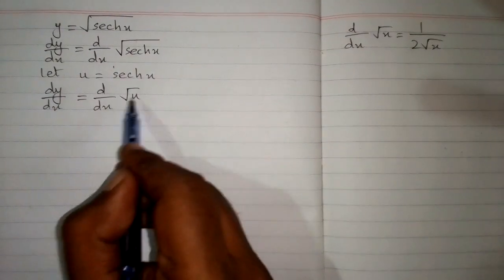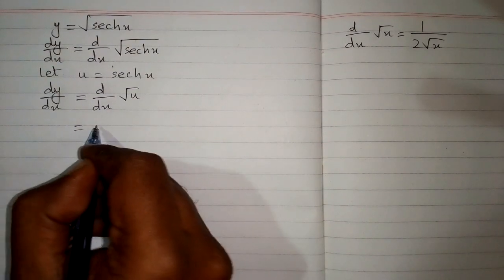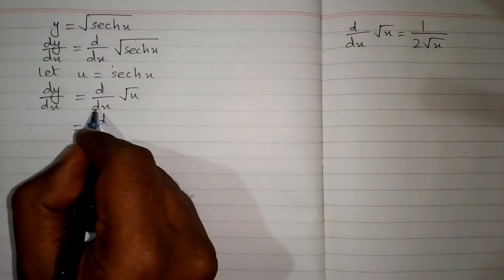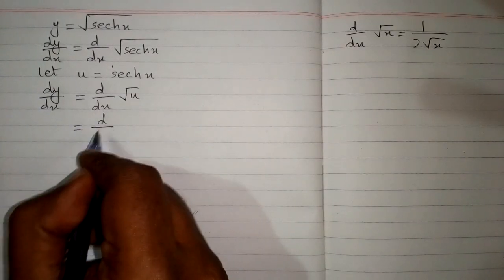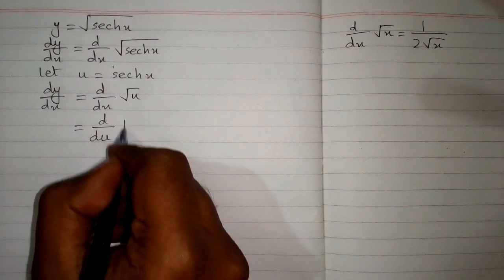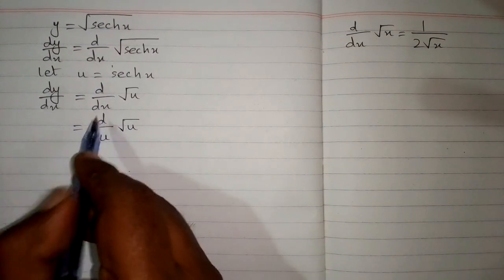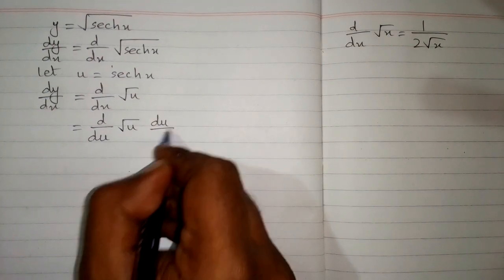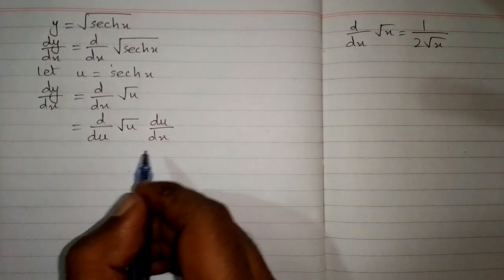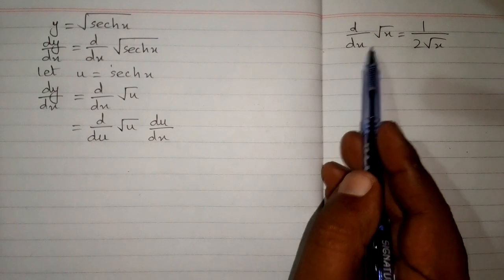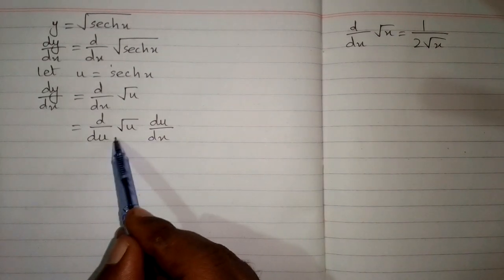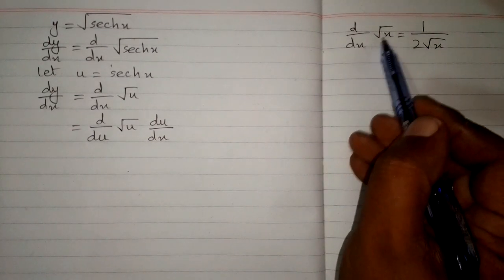Now again these two variables are different. So we must have du in place of this dx. So we will apply chain rule and we will replace this dx by du and multiply it by du by dx. Now we can apply this formula because these variables are same like this in the formula.